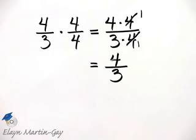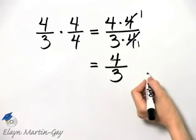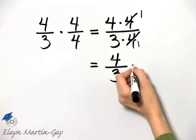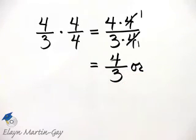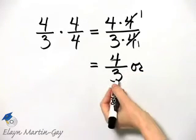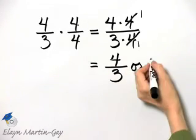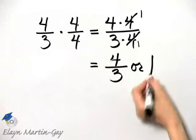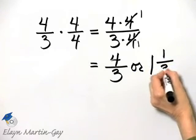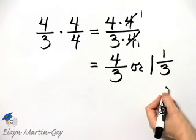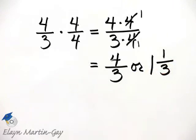It's an improper fraction. It is in simplest form, but if you'd like, you can write it as a mixed number. 3 divides into 4 one time with a remainder of 1. So my product is 4 thirds, or equivalently 1 and 1 third.